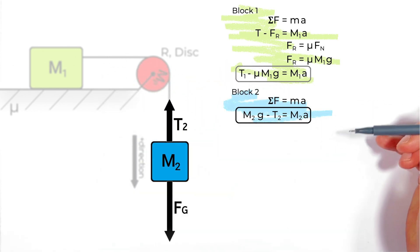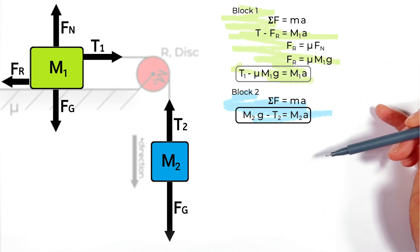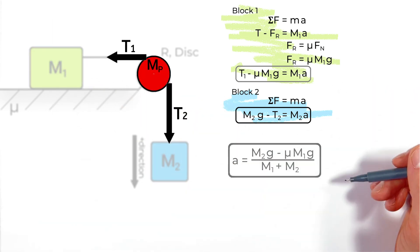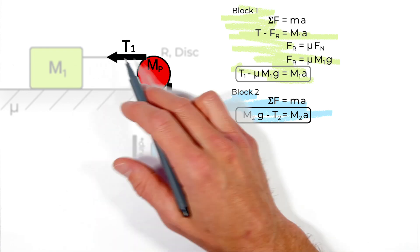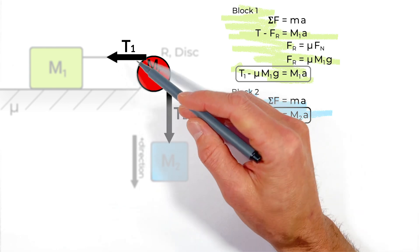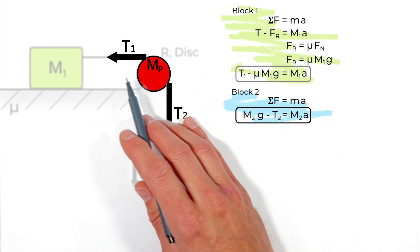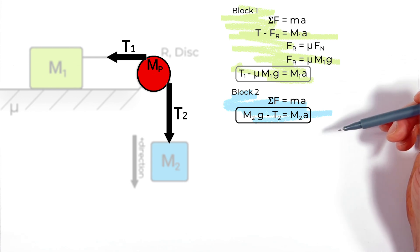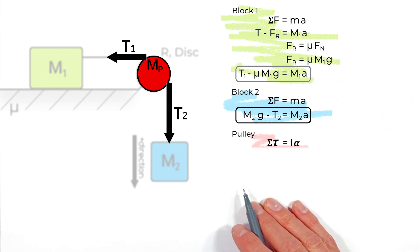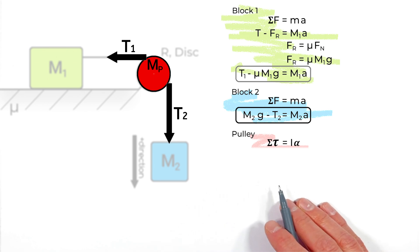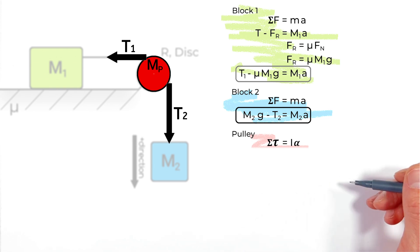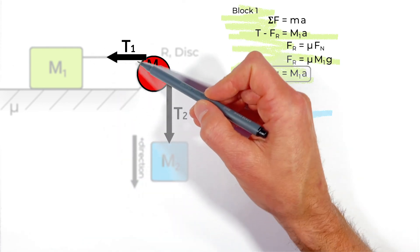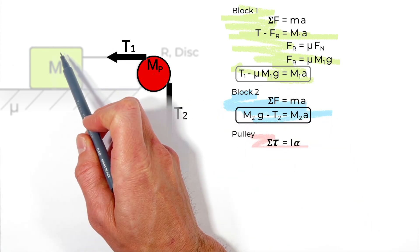If this were a simpler problem where the pulley had no mass, we'd just have two equations and two unknowns to solve for acceleration. But because this pulley has mass, we have to complicate the problem. The pulley doesn't translate — it doesn't move linearly left, right, up, or down — instead it rotates. So we need to apply Newton's second law for rotation to the pulley.